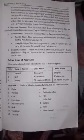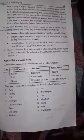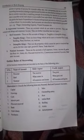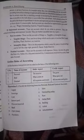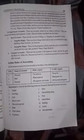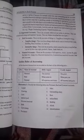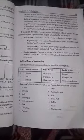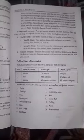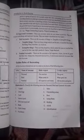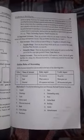The next point is nominal account. These are the accounts of all expenses, losses, income, and gains — like rent account and salary account. This is a nominal account. If you have a discount received or commission received, if you pay or receive, it will be a nominal account. If you have an outstanding account, it will be a representative account.